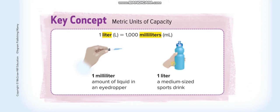To start today's lesson, you have to memorize these two things: one liter is equal to 1,000 milliliters. If you are converting from liters to milliliters, you have to multiply by 1,000. If you are converting from milliliters (smaller unit) to liters (larger unit), you have to divide by 1,000.